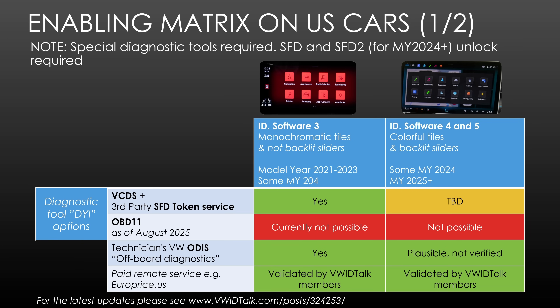The option we have tested and confirmed working is VCDS — that's how we coded Wes's car. To unlock the two modules we'll discuss, we also had to use a third-party SFD token service that allows you to unlock the modules specifically for your car. You can facilitate the physical unlock with VCDS. Once you provide VCDS the unlock token, it's relatively easy. We'll link details below on how to do it. VCDS is also known as VACOM from Rostec.